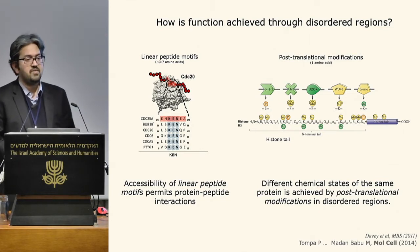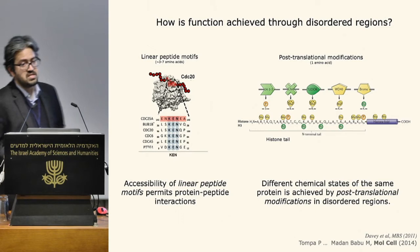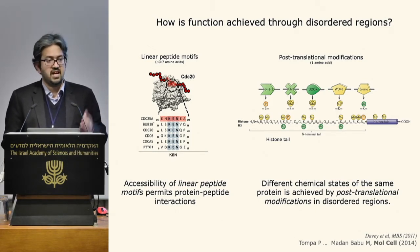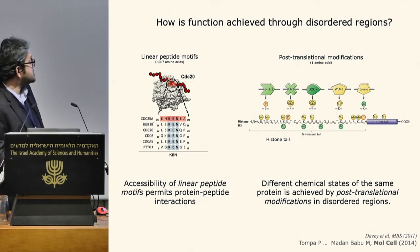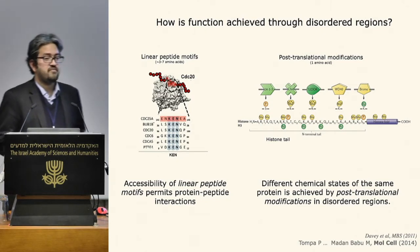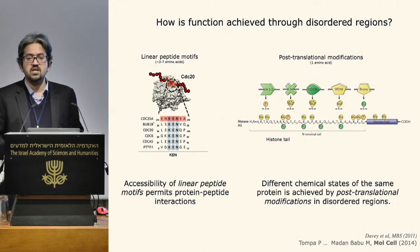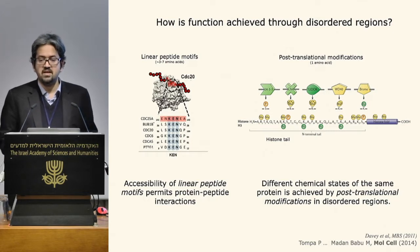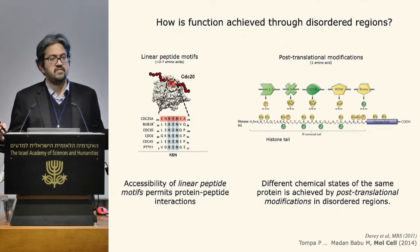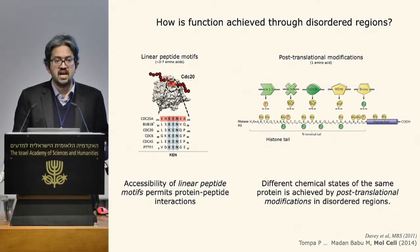There are two main mechanisms by which IDRs contribute to function. One is that they expose short linear peptide motifs — three to seven amino acid stretches that can mediate domain-peptide interactions in many signaling contexts. The other mechanism is acting as a substrate for post-translational modifications. The same protein can exist in different modified states, each exploited for completely diverse functions ranging from transcription to replication or repair. IDRs act as hubs because within about 50 amino acids, you can have multiple motifs and post-translational modification sites.